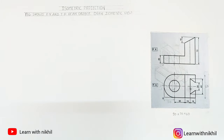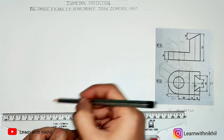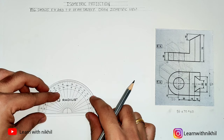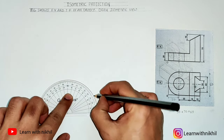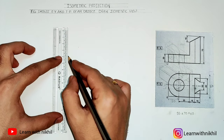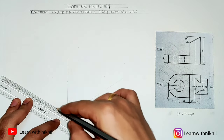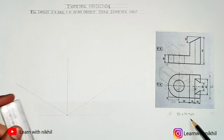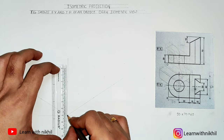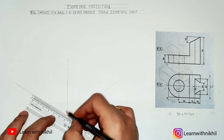Now that we have the three dimensions, we can begin with the actual problem. First we'll draw a straight line and mark a point O on it. From this point we will draw two angles — 30 degrees on one side, 90 degrees, and 30 degrees on the other side — and draw lines through them. These are our base axes: 30°, 30°, 90°. You have to do this in each and every problem. The right side of O will be the front view and the left side will be the side view.